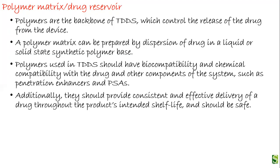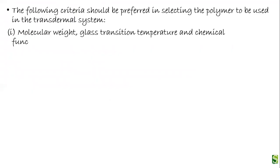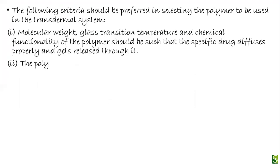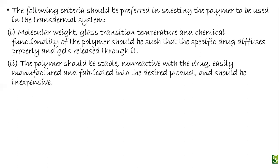Additionally, they should provide consistent and effective delivery of the drug throughout the product's intended shelf life and must be safe to use. The preferred criteria for selecting a polymer include molecular weight, glass transition temperature, and chemical functionality of the polymer, such that specific drug diffusion is achieved and the drug is released. The polymer should be stable and non-reactive with the drug.